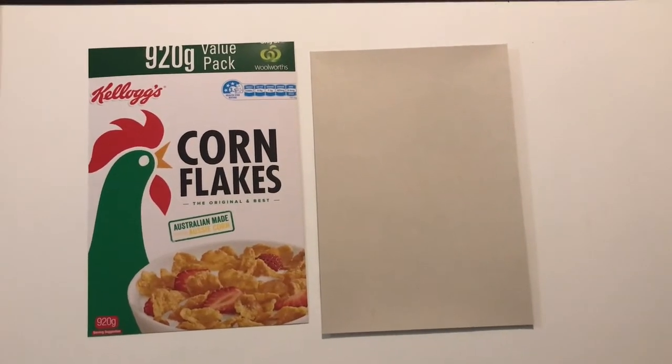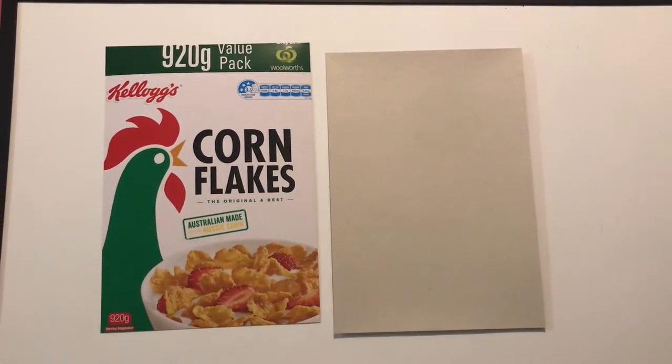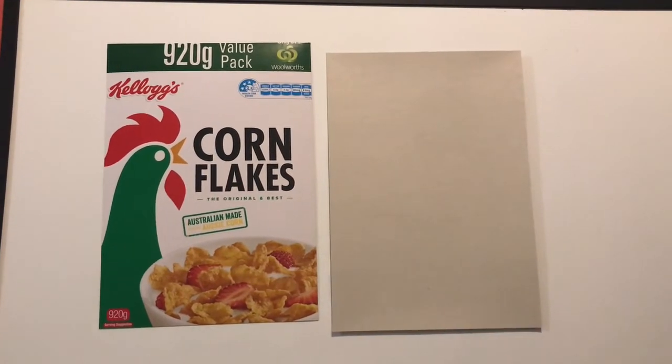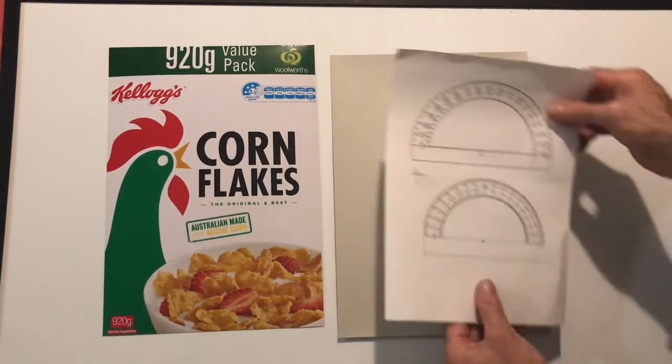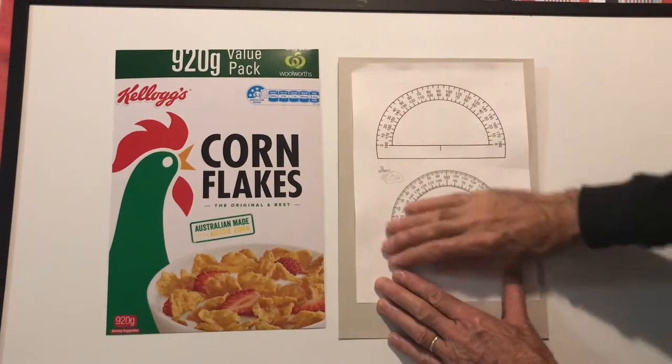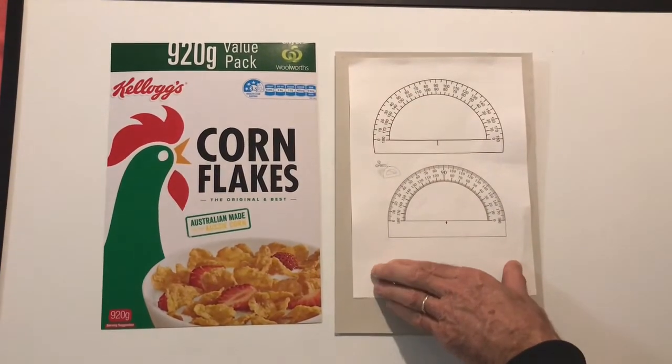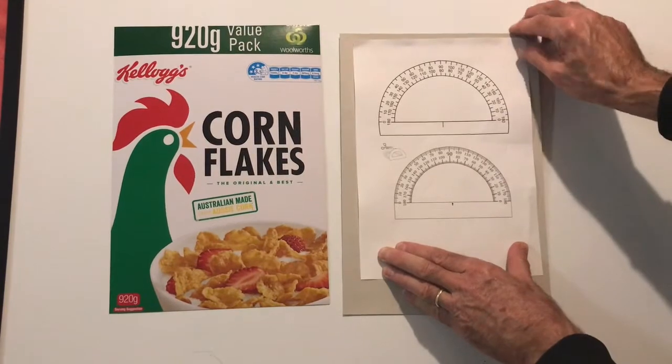Today we're working with protractors. To start you need to get an old piece of cardboard, you get your printout, you glue your printout onto your cardboard, wait for it to dry and then cut each protractor out.